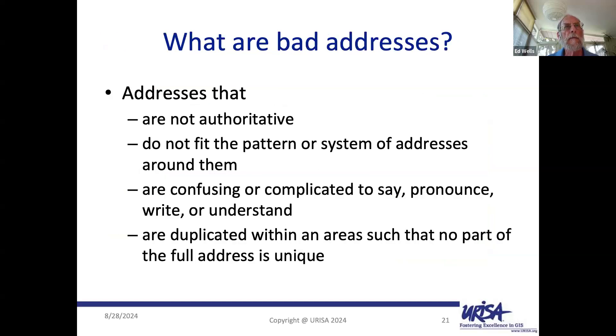These records are related to map features: address points, the road centerline network, and places with their boundaries. Address points are within or outside of given places, and the centerline network crosses those boundaries. That's the core of your address repository.